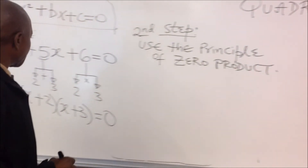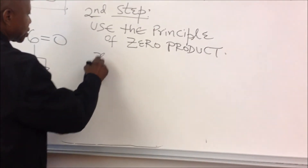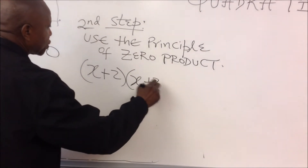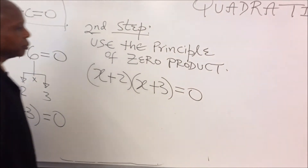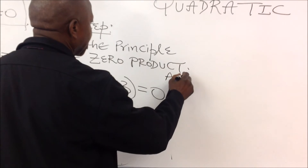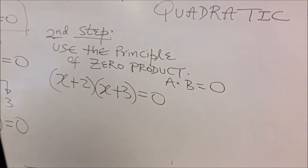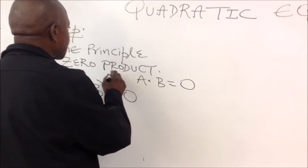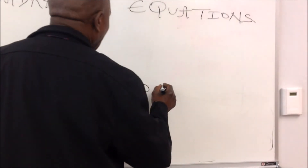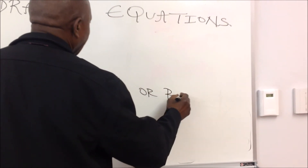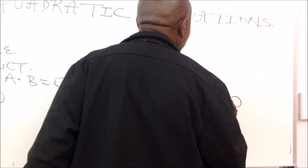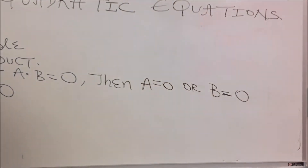So how do we implement this principle? Since we have x plus 2 times x plus 3 equal to 0, we use the principle that says: if you have a times b equal to 0, then a equals 0 or b equals 0. That is the key of the principle of zero product.